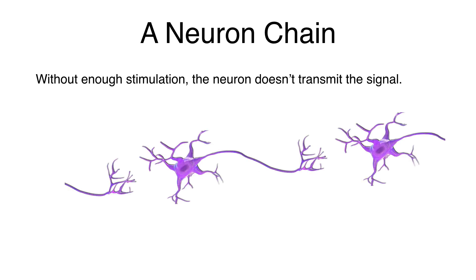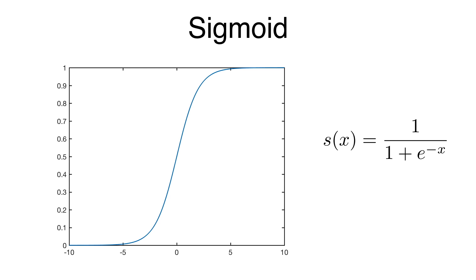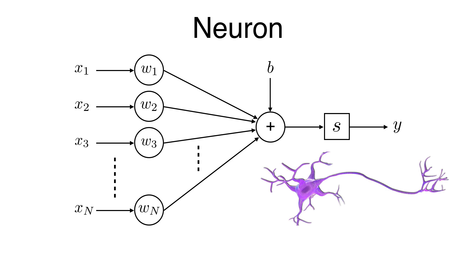We're not quite at a neuron yet. A key fact of a neuron is that without enough stimulation, it doesn't transmit the signal. We need a function where with very little stimulation, very little gets through the neuron, but with a lot of stimulation, a lot comes out. This function is called a sigmoid, and here is its expression. We take our adaptive combiner and add the sigmoid to the end of it to get our model for a neuron — and it even kind of looks like a neuron.